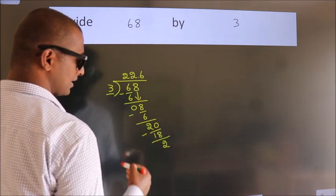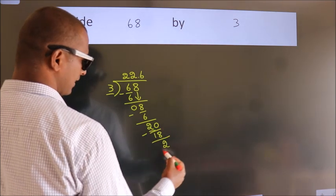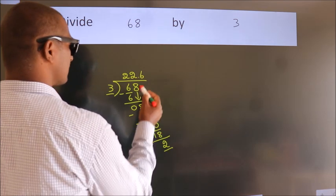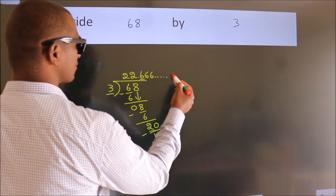Now, you observe. We had 2 here, and we got 2 again. That means, this number keeps on repeating. So, this is our quotient.